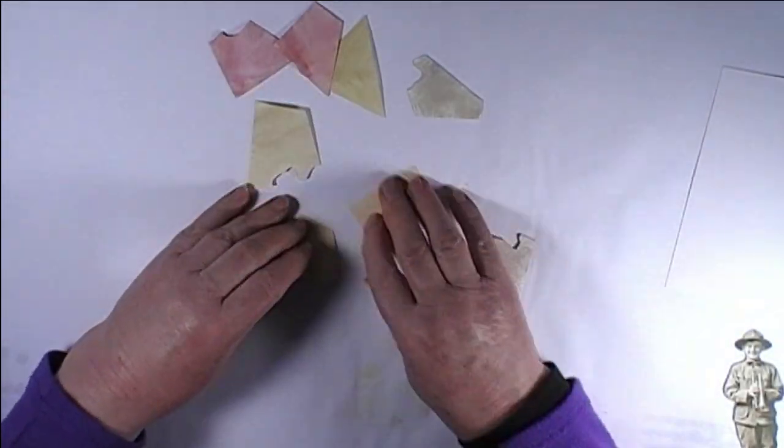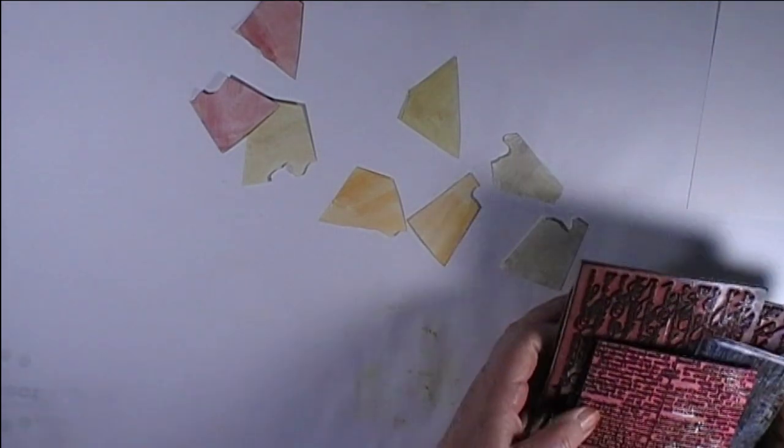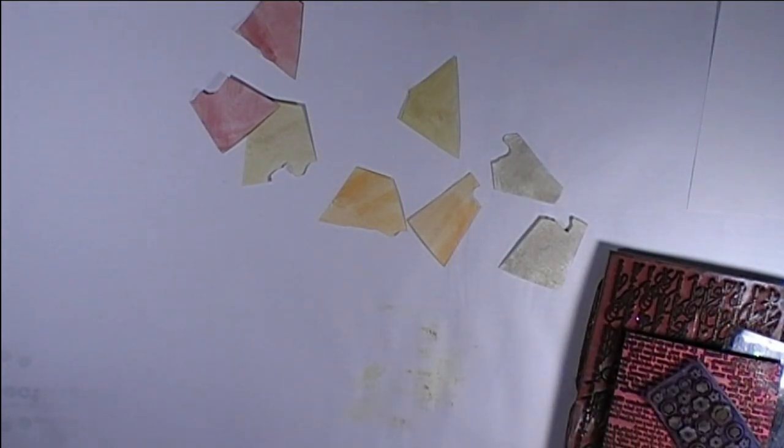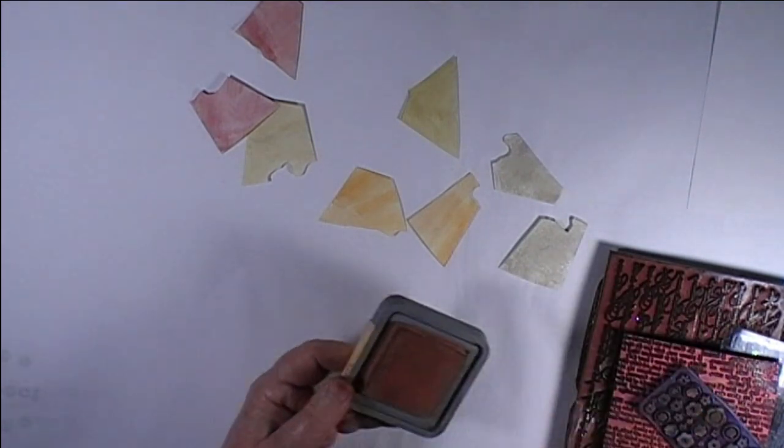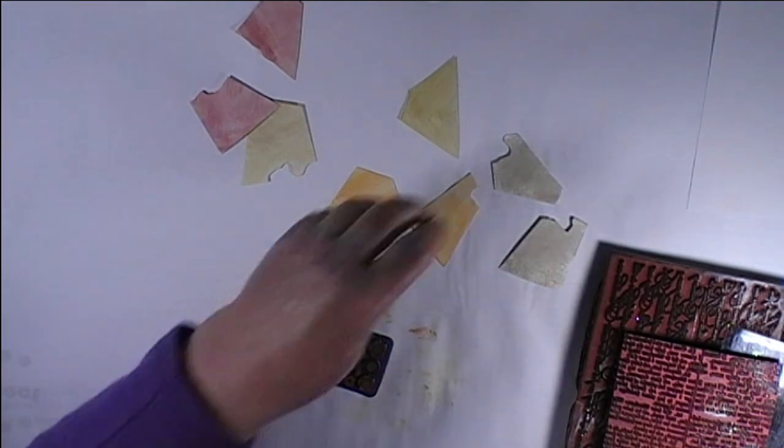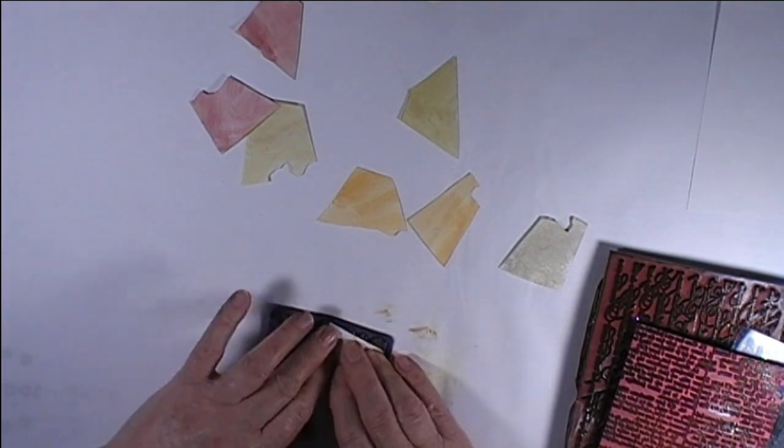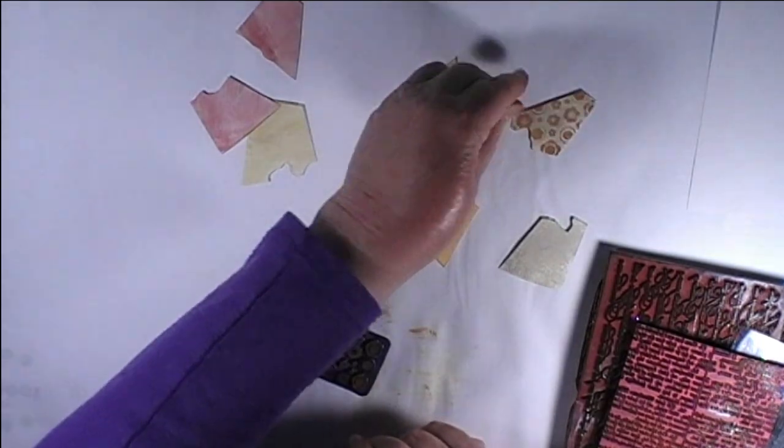The next thing to do is to put the patterns on. I've got eight different stamps here and we use contrasting colors to put the stamps on. So I'll use that one. I'll put some color on the stamp and that's one.